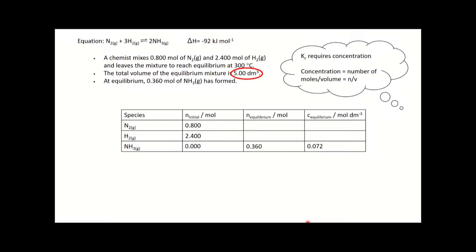The number of moles of nitrogen at equilibrium - we know we put 0.8 in and we also know that the number of moles of nitrogen used is half the number of moles of NH3 produced. If we've made 0.360 moles of NH3, half that amount of nitrogen has been used. If we take 0.180 away from 0.8, we end up with 0.62 moles of nitrogen at equilibrium.